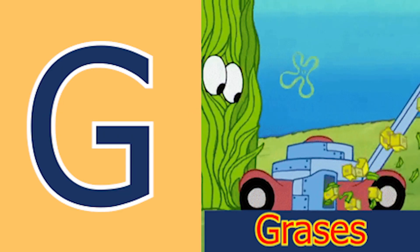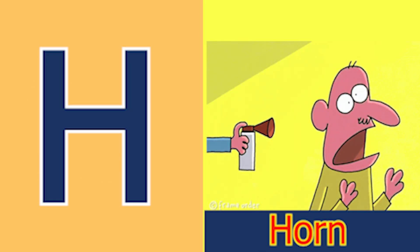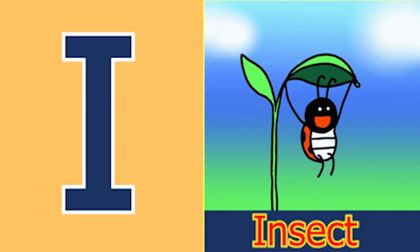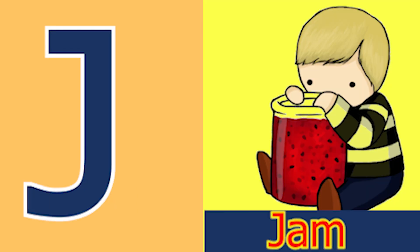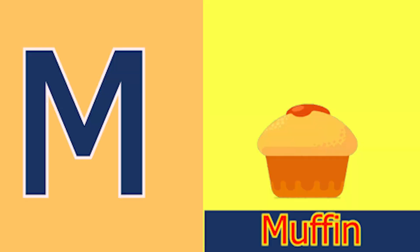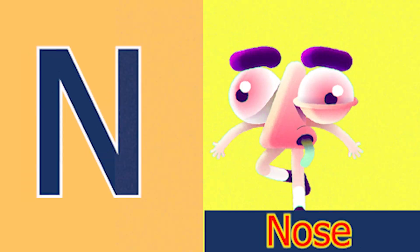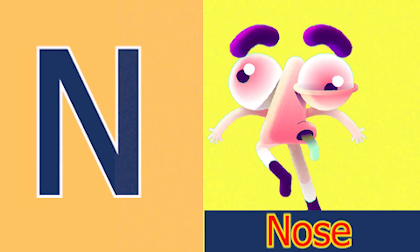G for glass and H for horn, I for insect, J for jam, K for kite, L for lamb, M for mud, N for nose.